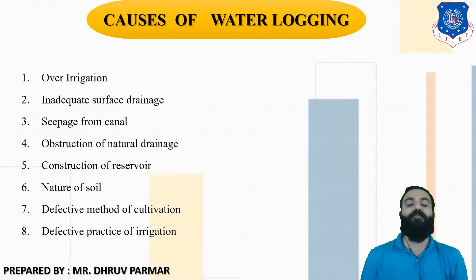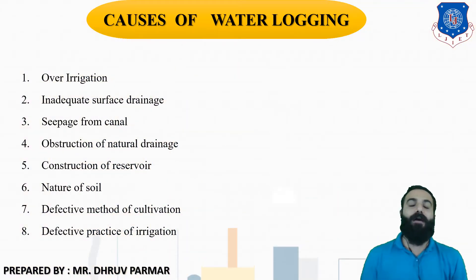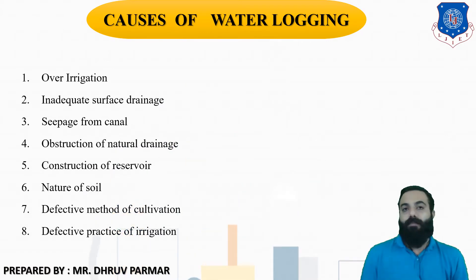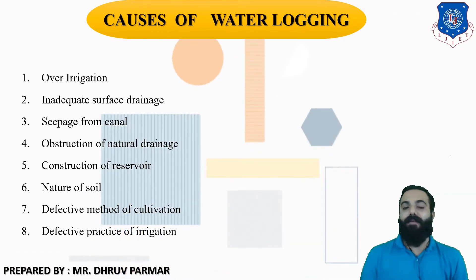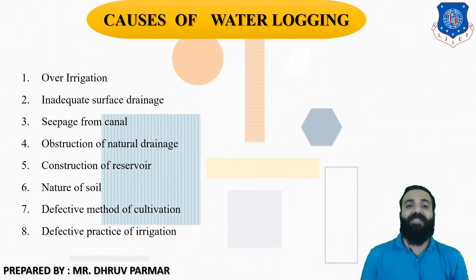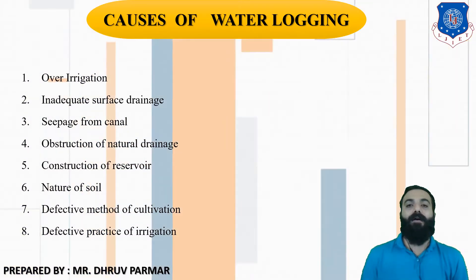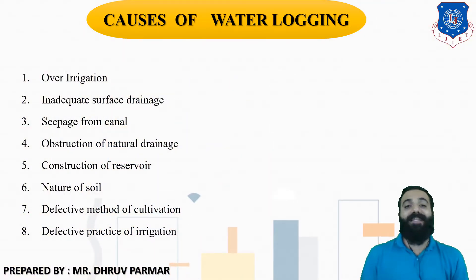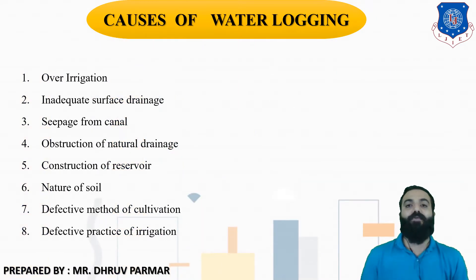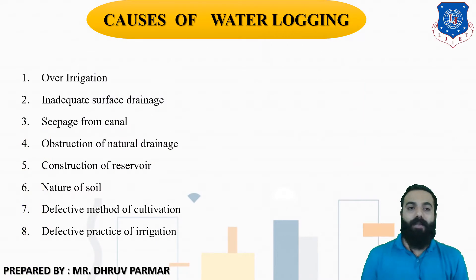The third cause is seepage from canals. There are two types of canals. In a lined canal, seepage is maximum. When the canal breaches — meaning canal failure — a large amount of water spreads into the land or farm and waterlogging occurs.